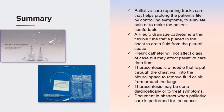In summary, palliative care reporting tracks care that helps prolong the patient's life by controlling symptoms to alleviate pain or to make the patient more comfortable. The Plurax drain catheter is a thin, flexible tube placed in the chest to drain fluid from the pleural space. The Plurax catheter will not affect class of case but may affect the palliative care data item. A thoracentesis is a needle put through the chest wall into the pleural space to remove fluid or air from around the lungs. Thoracentesis may be done diagnostically or to treat symptoms, and we document in the abstract when palliative care is performed for the cancer. If any of the procedures discussed were performed for non-malignant pleural effusion, we would not include it in our abstract.